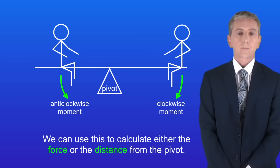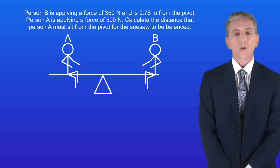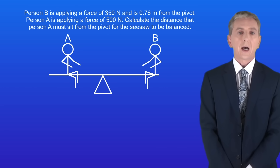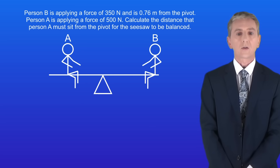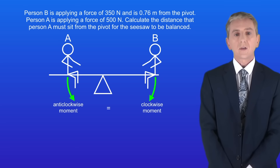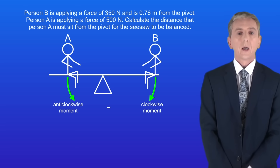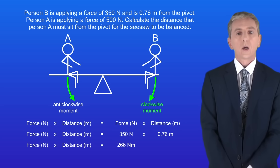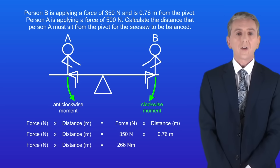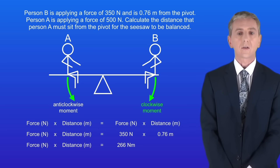Let's look at a typical question. Person B is applying a force of 315 newtons and is 0.76 meters from the pivot. Person A is applying a force of 500 newtons. Calculate the distance that person A must sit from the pivot for the seesaw to be balanced. Because the seesaw is balanced, the clockwise moment and the anti-clockwise moment must be equal. We now have all the information to calculate the clockwise moment: a force of 350 newtons and a distance of 0.76 meters, giving a clockwise moment of 266 newton meters.